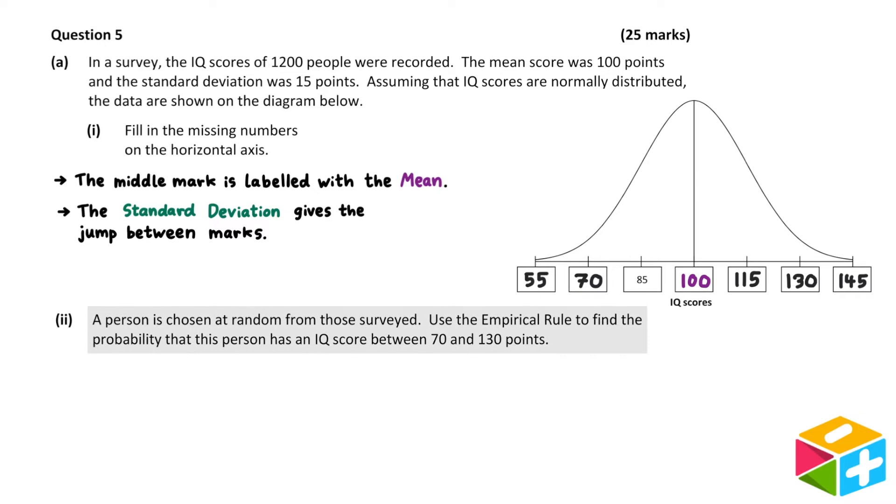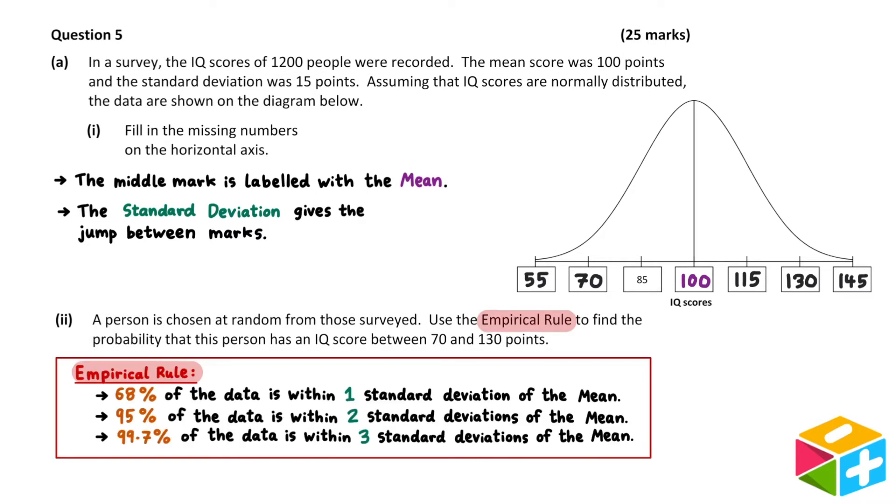Part II. A person is chosen at random from those surveyed. We are asked to use the empirical rule to find the probability that this person has an IQ score between 70 and 130 points. We are asked to use the empirical rule, so let's remind ourselves of what this is.